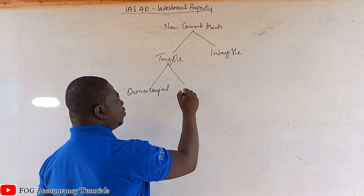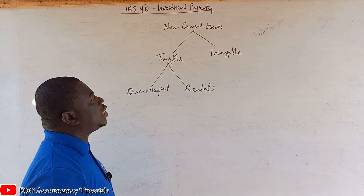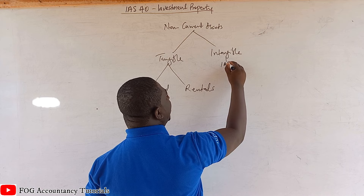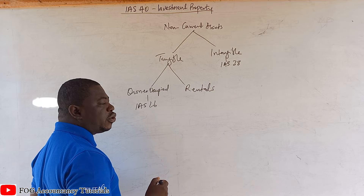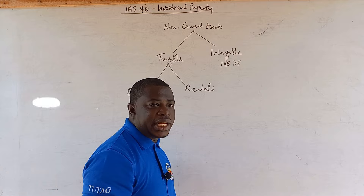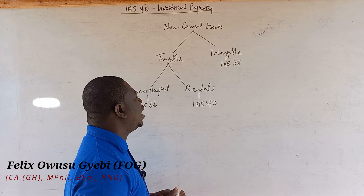We also have those that are being given out as rentals — we rent them out for income — and those kept for capital appreciation. The non-current asset tree is such that intangibles are regulated by IAS 38. Those that are owner-occupied are regulated by IAS 16, which we call property, plant and equipment. The tangible non-current assets being rented out for income or held for capital appreciation, or both, are called investment property and are regulated by IAS 40.